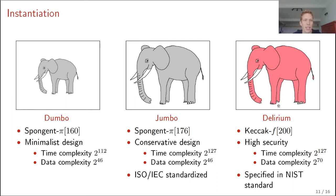Before proceeding, I would like to mention that originally here were pictures of the Dumbo, the elephant Dumbo from the famous movie, Jumbo, the big elephant, and Delirium, the logo of the Belgian beer. But I replaced them with self-made pictures just to avoid any copyright issues.